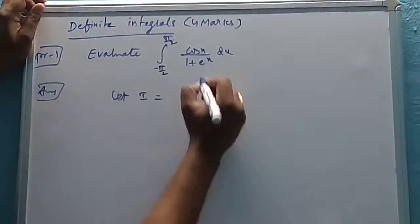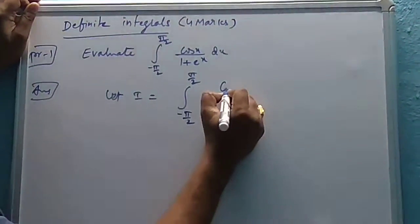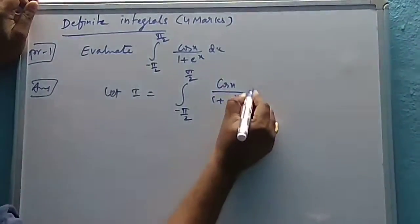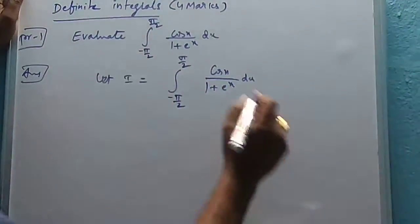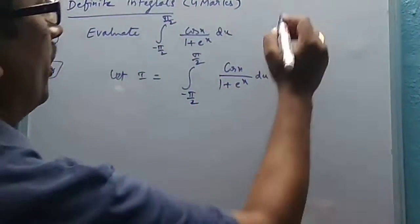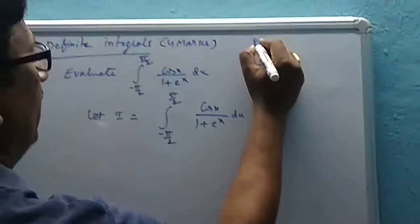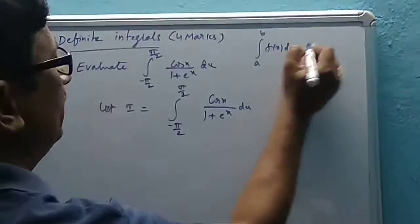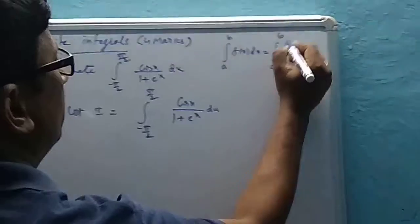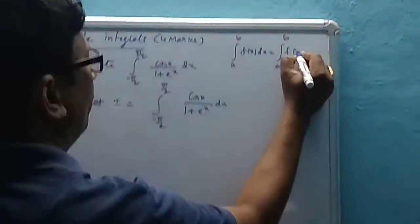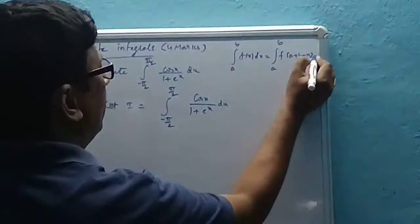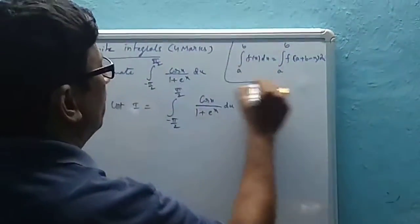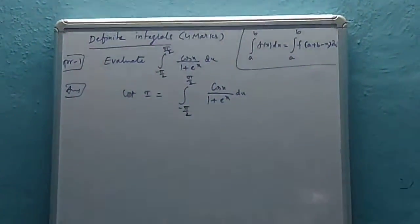So I is equal to the integral from minus π/2 to π/2 of cos(x) divided by (1 plus e to the power x) dx. One of the properties of the definite integral states: integral from a to b of f(x) dx is equal to integral from a to b of f(a plus b minus x) dx. This is one of the properties we learned in the previous video.